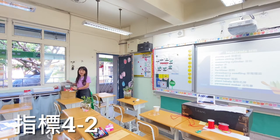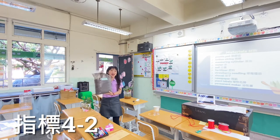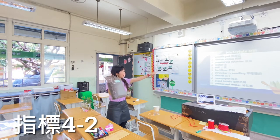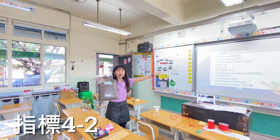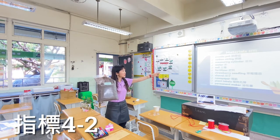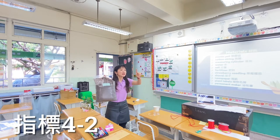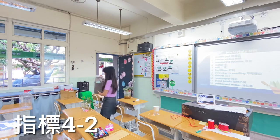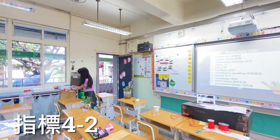I have the soil especially for the strawberry. And what else? 肥料 — how do we say that? Fertilizer. Yes, Jayden, you are right. Fertilizer. That helps them to grow up better.